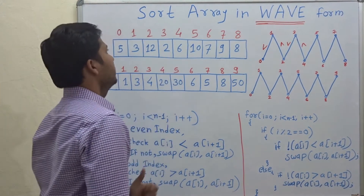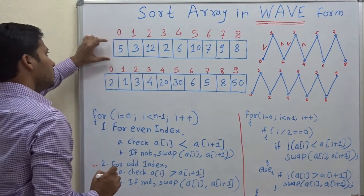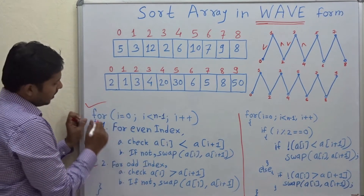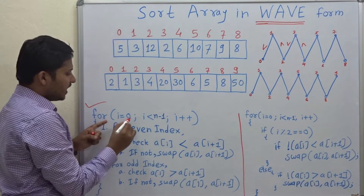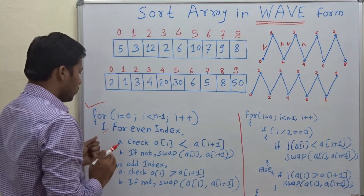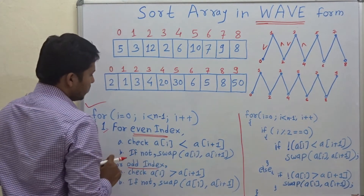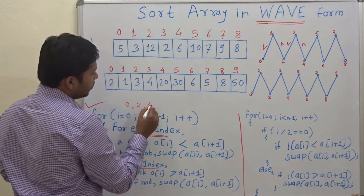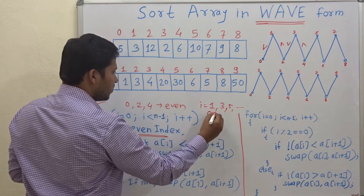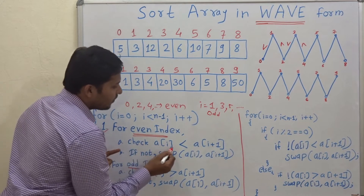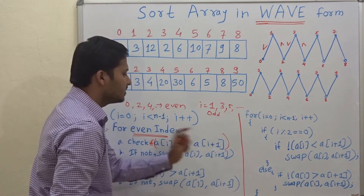Let's see how to convert this array into a waveform. This array is not in waveform. A for loop traces the array from 0 to n minus 1, and inside it two operations are performed: one for even indices and one for odd indices. For even indices (0, 2, 4...), check if a[i] is less than a[i+1]. For odd indices (1, 3, 5...), you check a different condition.